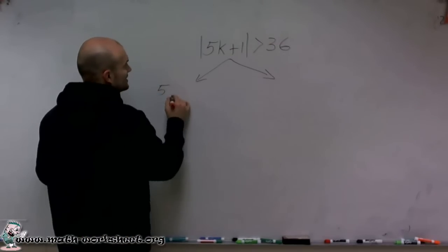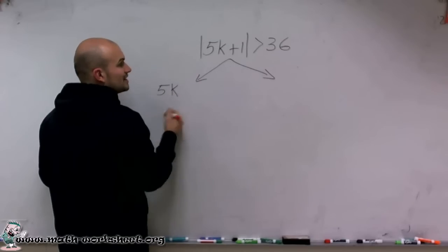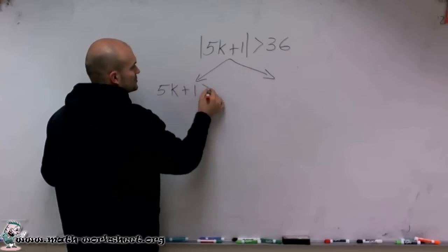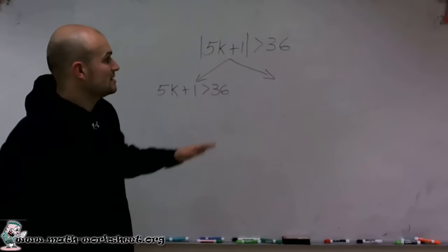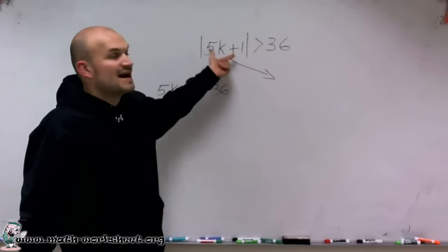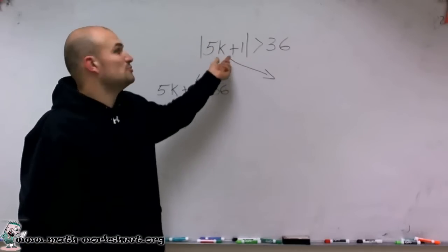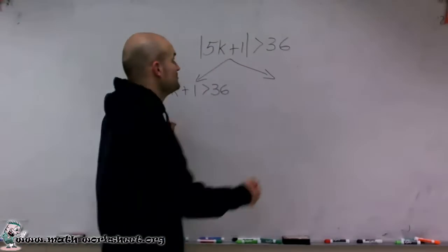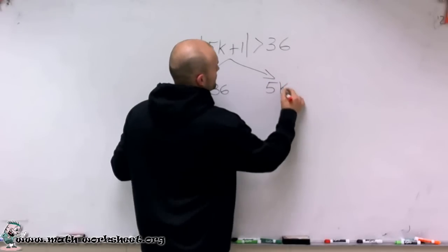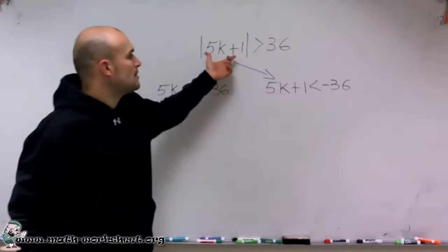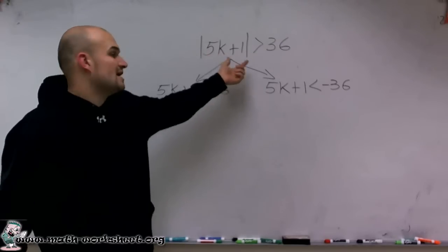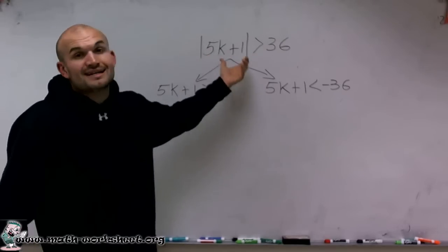So the first one, I can just eliminate my absolute value and represent the positive solution. So I can say 5k plus 1 is greater than 36. But then, I also need to represent what if I had a negative value, the same value but negative inside the absolute value. So therefore, to do that, I say 5k plus 1 is now less than negative 36. And that's how I represent if inside my absolute value had the same value as this but negative.